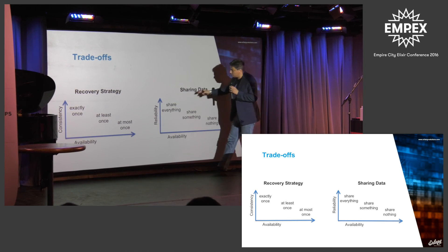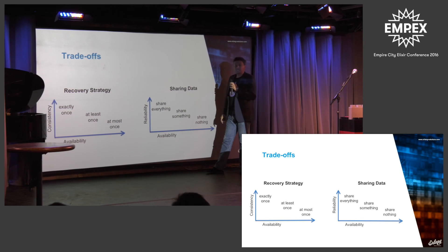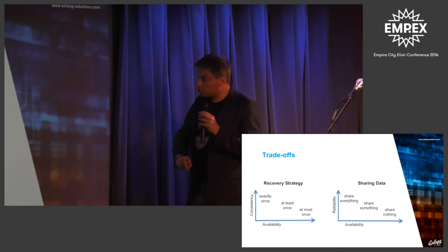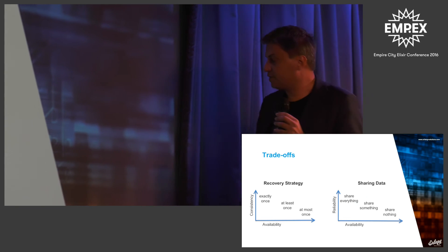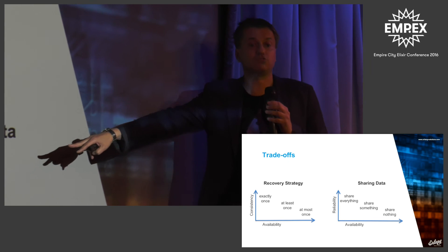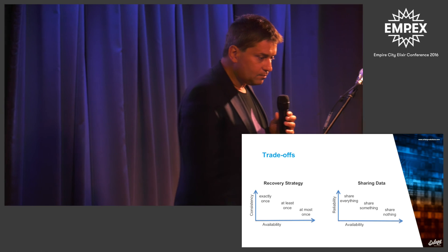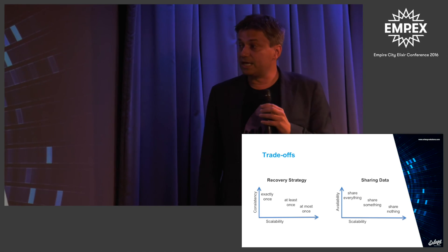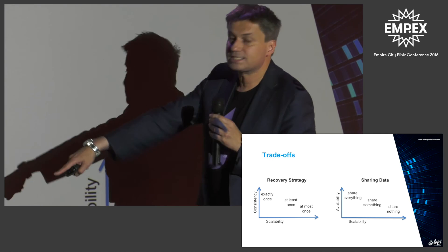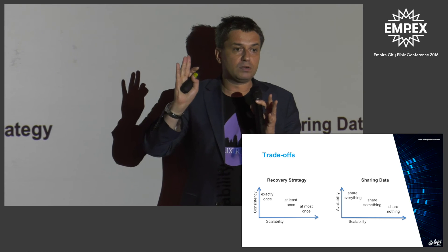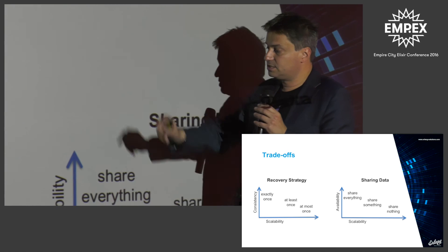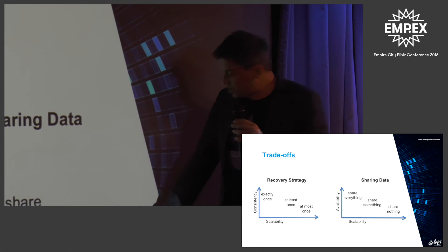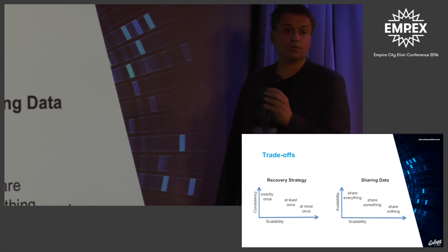The same trade-offs apply to data sharing: 'share everything' is the most reliable but also the least available due to the huge overhead of sharing all your data across the network. 'Share nothing' is the most available but the least reliable because you can lose data along the way. You've made very similar trade-offs when it comes to scalability: 'exactly once' is the least scalable because if you get a failure back, you need to stop and investigate. 'At most once' is the most scalable but also the least consistent. 'Share nothing' is the most scalable; 'share everything' is the least scalable.